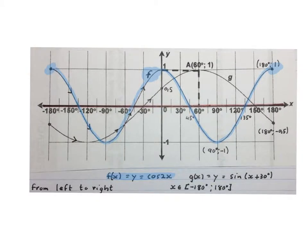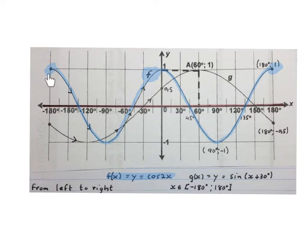This blue graph is called f. f of x equals y equals cos 2x. It runs from x an element of minus 180 degrees included up to 180 degrees included. We read a graph from left to right, so this graph is going down, then up, then down, then up.